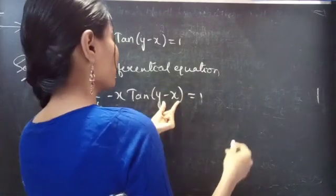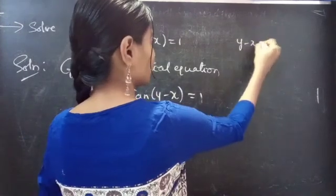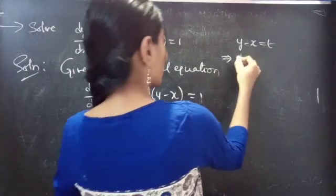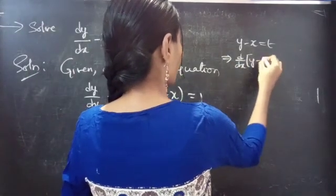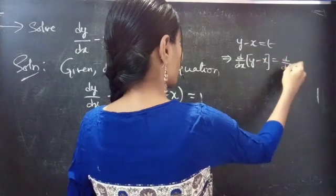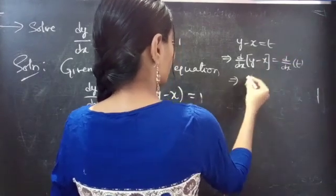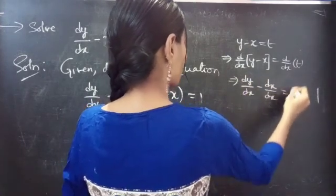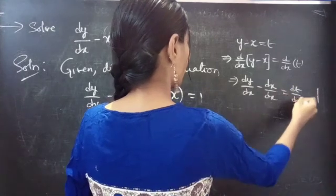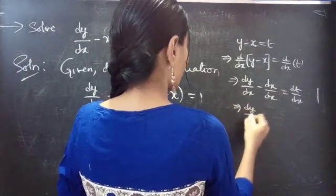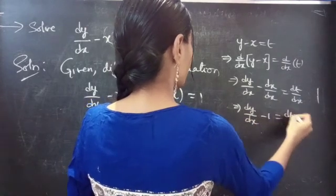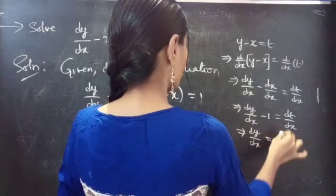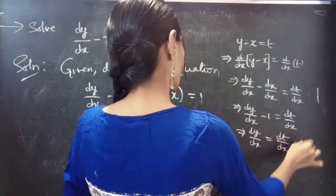Now, put y minus x equals to some t. Differentiate with respect to x on both sides. Then dy/dx of (y minus x) equals dy/dx of t, which gives dy/dx minus 1 equals dt/dx. You can also write this as dy/dx equals dt/dx plus 1.